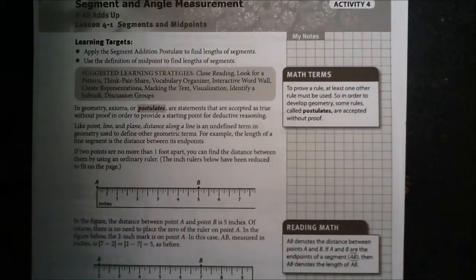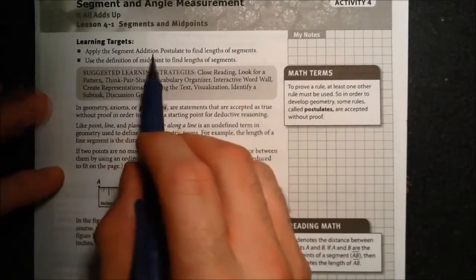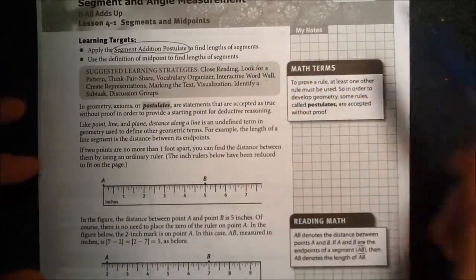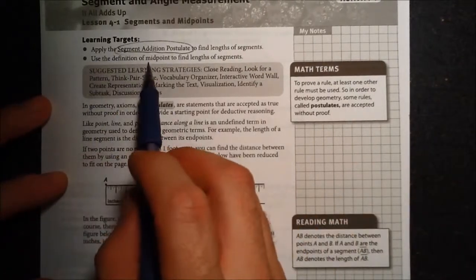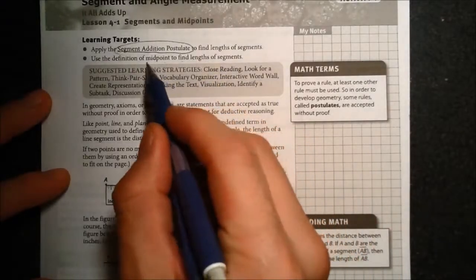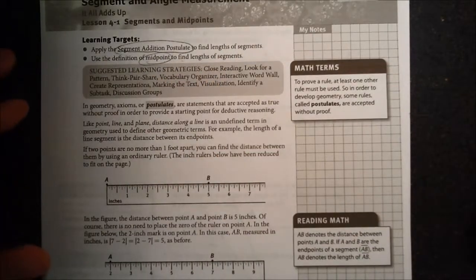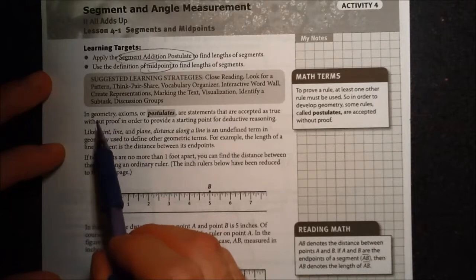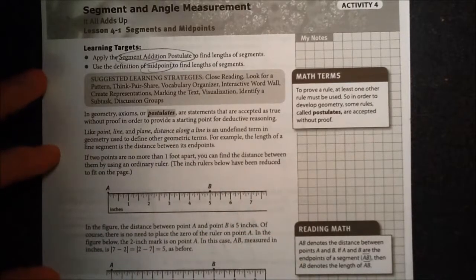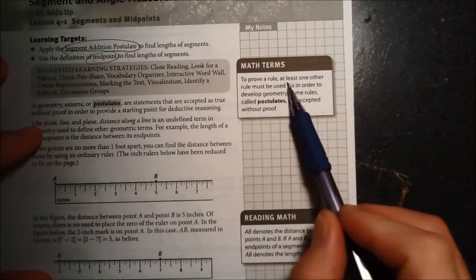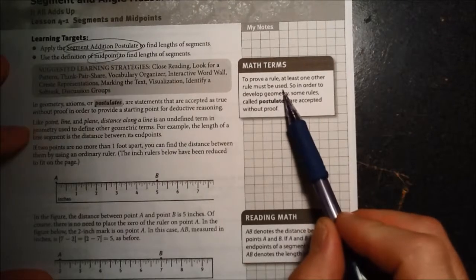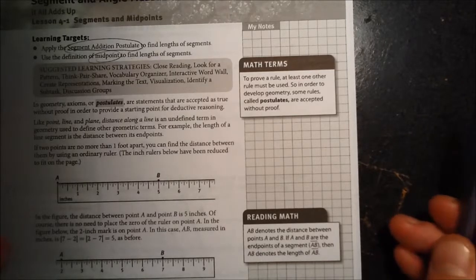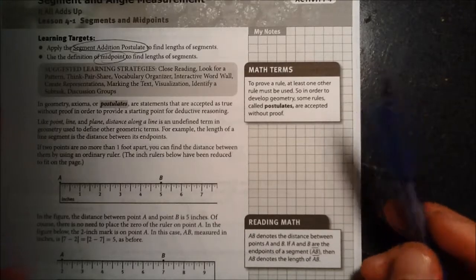So let's start reading and get into it. Our learning target is to apply the segment addition postulate, so we're going to have to figure out what that is, and we're going to use that to find lengths of segments in different scenarios. Also we're going to use the definition of midpoint to find lengths of segments, and I'm sure we're familiar with that term midpoint, but we're going to see its implications in geometry and finding segment lengths. It says that in geometry, axioms or postulates, so that's a new word there, so let's go over here to math terms. It says to prove a rule, at least one other rule must be used. That means you've got to start from somewhere, and those are those axioms, those are those postulates, that's your foundation, those are very similar to your undefined terms.